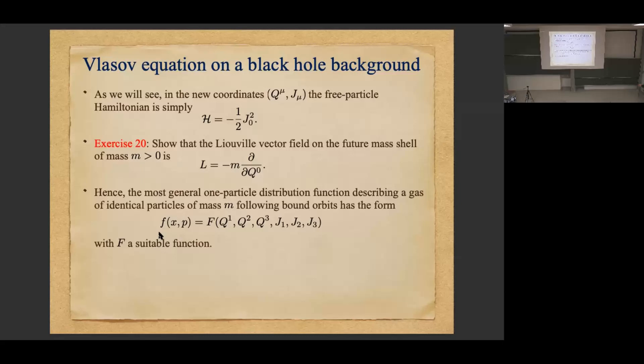The Liouville equation, or the Vlasov equation, is that L of f should be zero. Now if L has this form, that means f is a function of all the remaining variables. On the mass shell, the mass is fixed, so f depends on q_1, q_2, q_3, j_1, j_2, j_3. Here q_1, q_2, q_3 are really angle variables, so they're 2π-periodic, and f should be 2π-periodic in those first three entries.